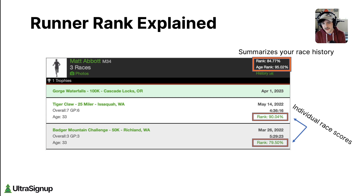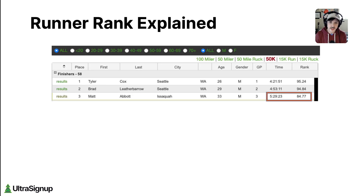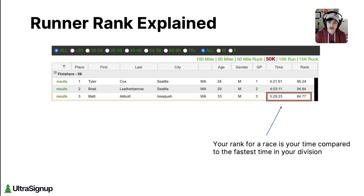To understand how rank is calculated for individual races, let's click into my first race result chronologically, which is Badger Mountain Challenge 50k. Make a mental note that it says 79.50% here — this is my rank for that race. On the results page, note that it's pulling in the overall rank we saw in my profile banner from my row, the 84.77%. That's not my rank for this individual race; it's my overall average.